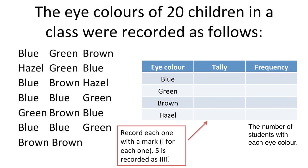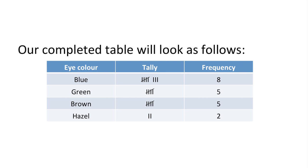For this particular experiment, this is what the completed table would look like. We have all our tally marks in the central column, then we add those up to get the numbers in our frequency column. When you've conducted an experiment with a certain number of people, it's always important you check that the results match the number of people who took the experiment. We actually asked 20 children their eye colour, and the total of our frequency column here is 20, so we know we've got every result in there.